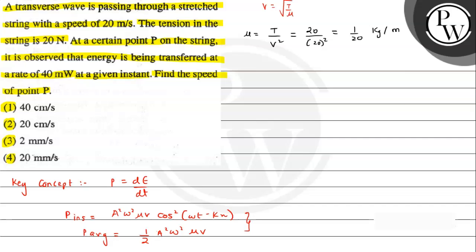From here, if we talk about displacement of a particle, it is given by the expression y equals A sine of omega t minus kx. If we want velocity of a particle, we take dy by dt.